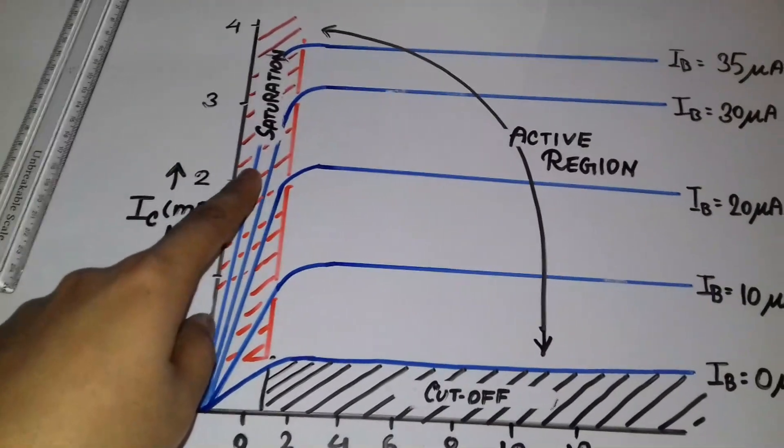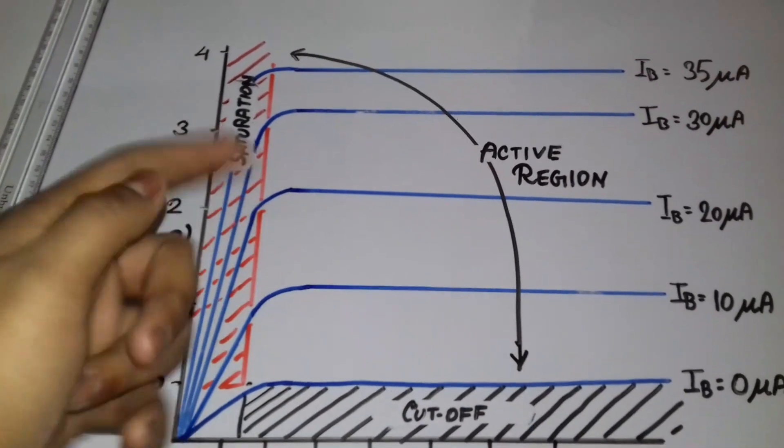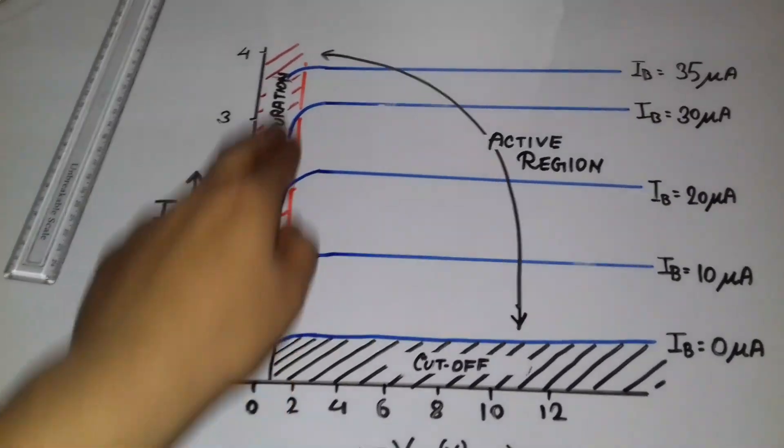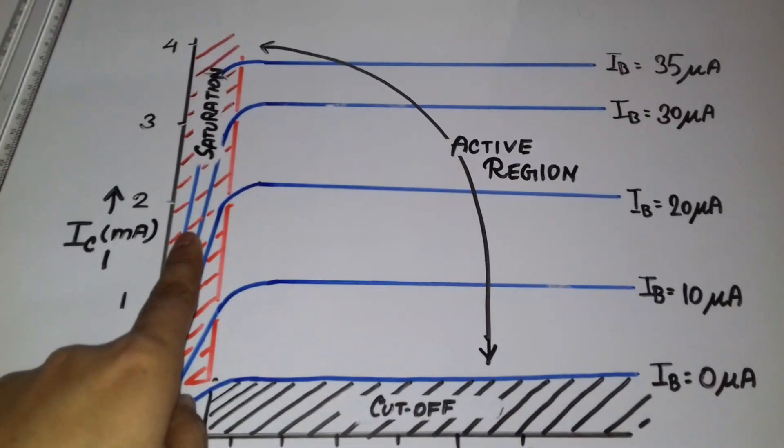And the saturation region - here both junctions will be in forward bias. So high amount of current will be flowing and the current will be increasing exponentially at this high rate. And this is called the saturation region.